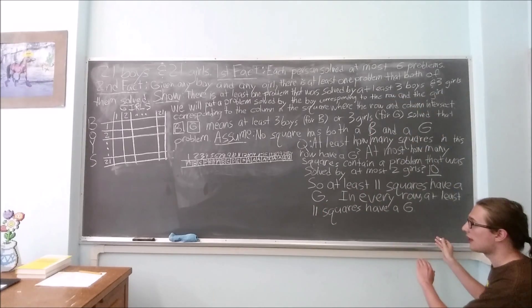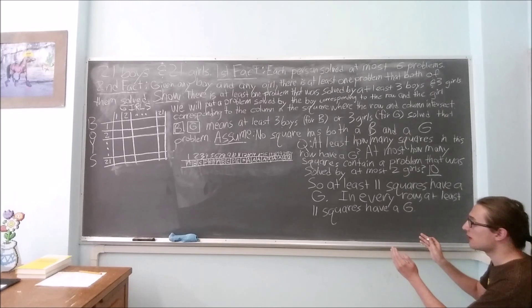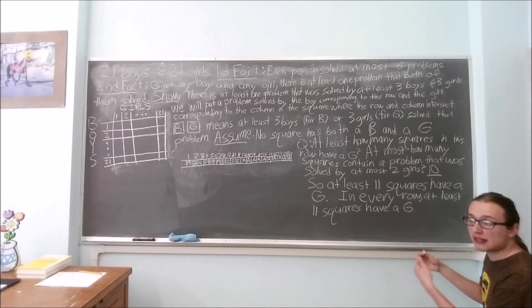In the same way, we see that in every column there need to be at least eleven squares with a B in them.